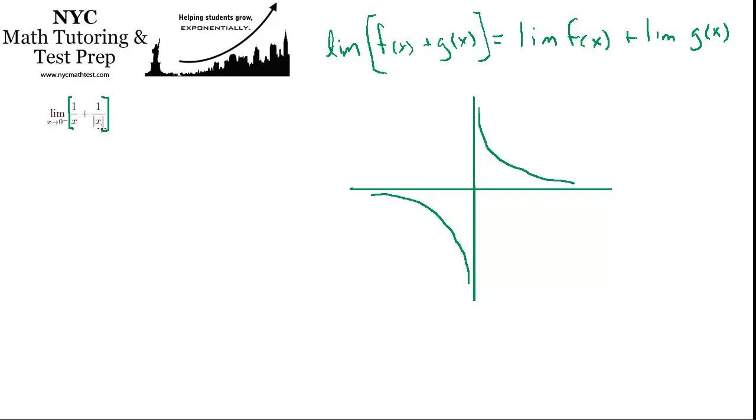And then 1 over absolute value of x. When x is positive, it has the exact same shape. It's actually overlaid right here. It literally is the same graph. But when x is negative, it takes the absolute value. So it actually comes over here.